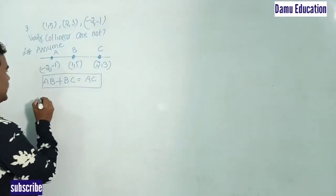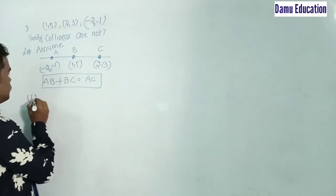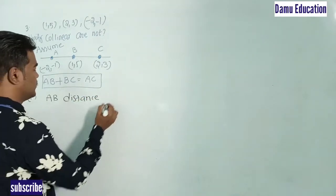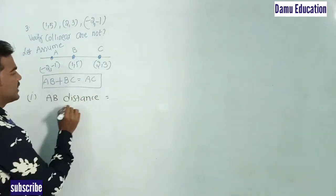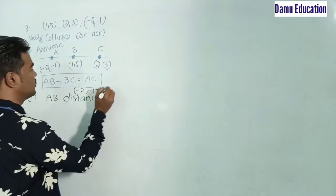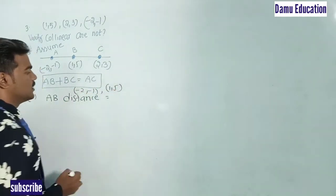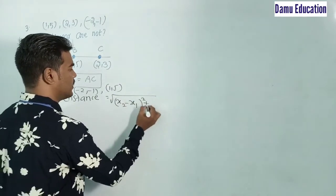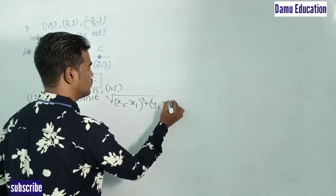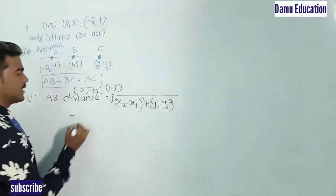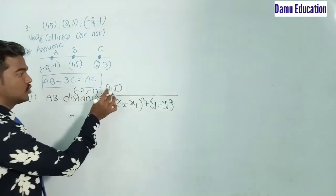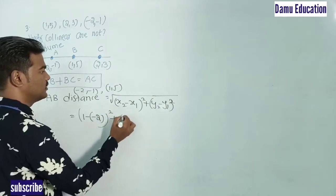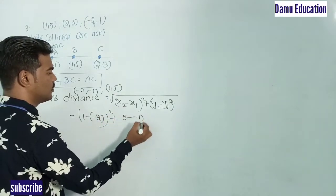First, let's calculate the distance AB. The points A and B are (−2, −1) and (1, 5). Using the distance formula: AB = √[(x2 − x1)² + (y2 − y1)²] = √[(1 − (−2))² + (5 − (−1))²].